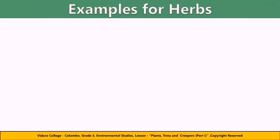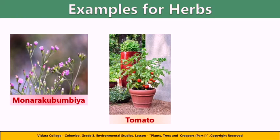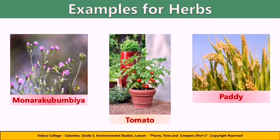Here are some more examples for herbs. The Monrokodumbia plant is a medicinal plant; its flowers are mostly pinkish in color. Tomato is a flowering plant and the fruit of this plant is labelled as a vegetable for nutritional purposes; tomatoes are a good source of vitamin C. Paddy is usually planted in a flat field filled with water. Paddy is the name of the crop and rice is the grain obtained from paddy — when the husk is removed from paddy, rice is obtained.